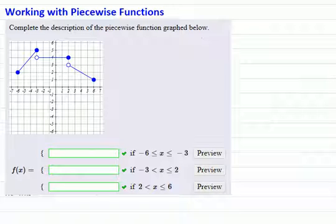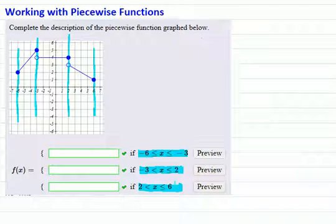When I look at the graph, the graph has three branches. The first branch is from negative 6 to negative 3, so it has to correspond to the first equation. The second branch is from negative 3 to 2 and has to correspond to the second equation. And the third branch is from 2 to 6 and has to correspond to the third equation.